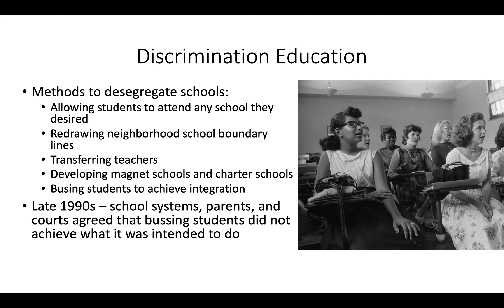Now, Brown versus the Board of Education desegregated schools. Here are some methods that federal and state governments used to integrate schools. One was allowing students to attend any school they desired. Also, they redrew neighborhood school boundary lines so it mixed up the races — Black, White, Hispanic — so it wasn't where one neighborhood of white Americans went to one school and African Americans to another. They redrew the lines to break it up and integrate.